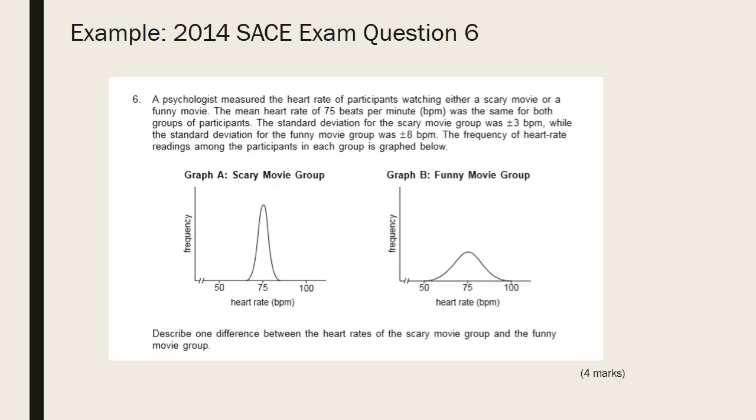To finish, let's look at another past exam question. Pause the video for a few moments to read and attempt the question. So this question is asking you to describe one difference between the heart rates of the two movie groups, and it's worth four marks, which means you need two linked pieces of information. Before we proceed to answer the question, it is worth noting that in the exam...